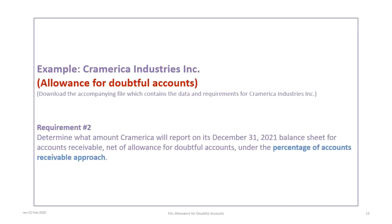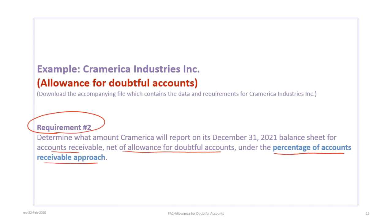We will now proceed with requirement two, which is to present accounts receivable net of allowances under the percentage of accounts receivable approach, also known as the AR approach.